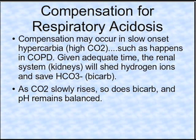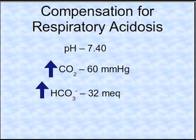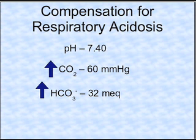Let's start with the compensation for respiratory acidosis. This compensation can only occur if it's a slow, gradual rise in CO2, such as what happens with the COPD patient. Given adequate time, the kidneys will shed hydrogen ions and save bicarb. By doing this, the body corrects the pH — high CO2, high bicarb to balance it. pH is an indicator of the balance between acid CO2 and base bicarb.